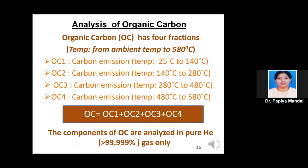In this analyzer, we can analyze four fractions of organic carbon: OC1, OC2, OC3, and OC4. OC1 is emitted at temperatures from 25°C to 140°C. OC2 emissions occur from 140°C to 280°C. OC3 concentration is emitted at temperatures of 280°C to 480°C. All analyses for organic carbon fractions are carried out in pure helium gas.